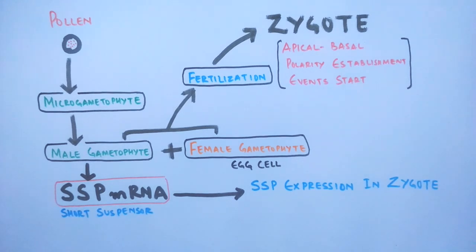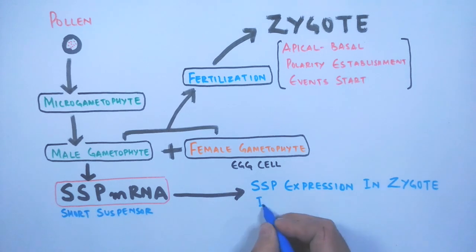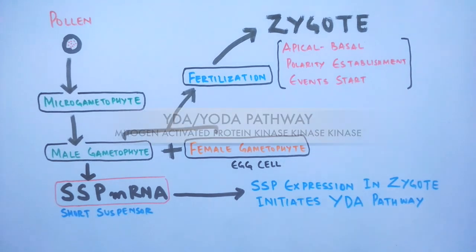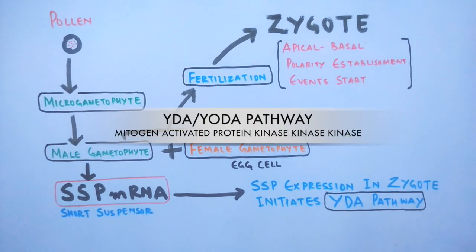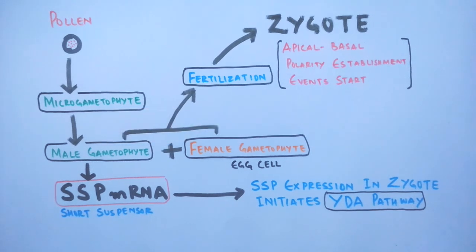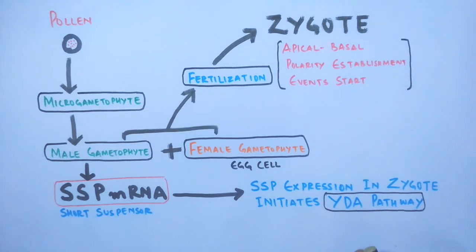Then this sspmRNA expresses within the zygote and starts the YODA pathway. It is the mitogen-activated protein kinase kinase. Let's see in detail how these events occur.